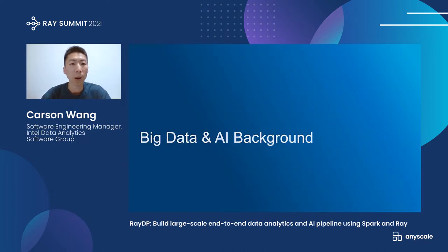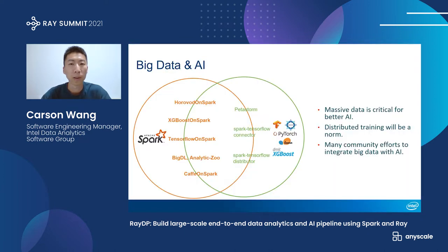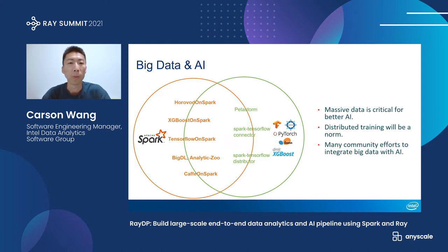Let's get started with some big data and AI background. Big data and AI have been two different communities. Apache Spark is one of the leading big data frameworks and it has been evolving quickly in the past few years. On the other side, there are also more and more machine learning and deep learning frameworks being very popular, like TensorFlow or PyTorch. There are more and more intersections between these two communities. One reason is that massive data is very critical for better AI — to get a better AI model, we actually need a very large number of high-quality data.